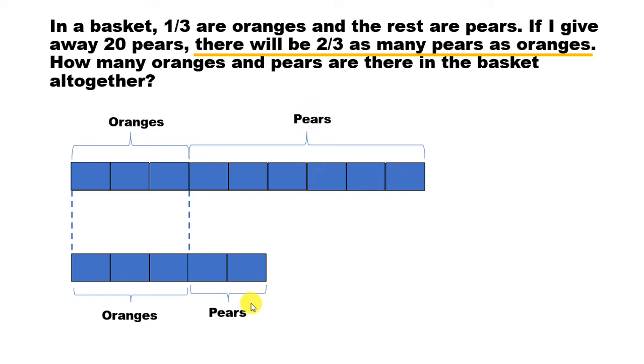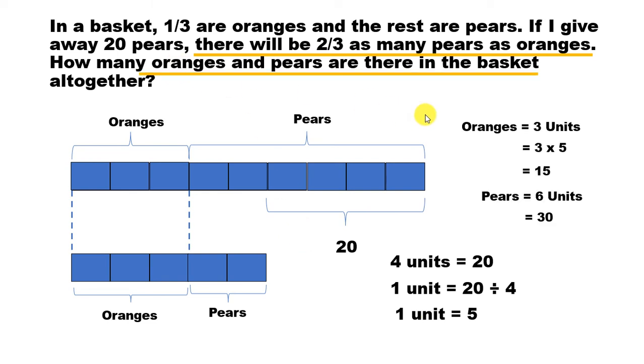How many oranges and pears are there in the basket? That's what we need to figure out. But before that, one thing to notice: if we are giving away 20 pears, and that is the amount that is getting reduced here, 20 pears is what is equal to 1, 2, 3, 4 units here. So 4 units is equal to 20, and 1 unit is equal to 20 divided by 4 which is 5. So 1 unit is 5.